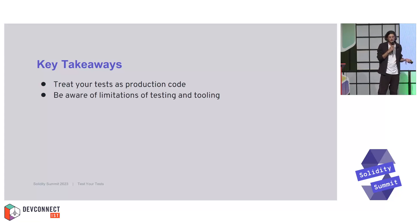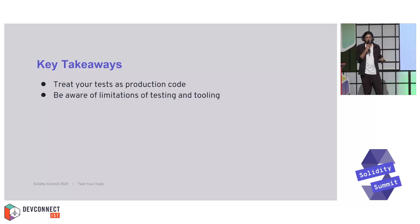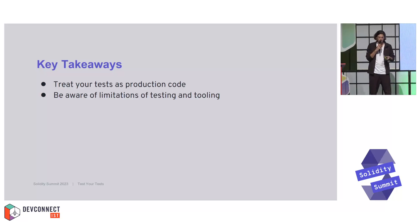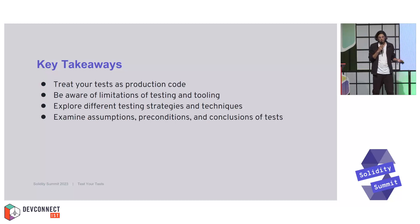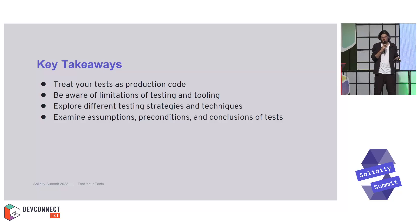Be aware of any limitations in your testing and your tooling. Your tests can only go so far — you might not cover every edge case, your fuzzer might not cover every edge case, and your tooling can actually contain bugs. With formal verification tooling, when translating your code to the formal verification system there might be errors in translation. It's important to explore different testing strategies and techniques, not to rely on a single one. Also examine any assumptions, preconditions, and conclusions you make in your tests — are these tests valid for realistic scenarios? Are you capturing all the important edge cases?